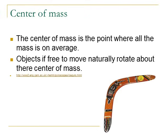Another term you need to be familiar with before you start is center of mass. Center of mass is like the average — where all the mass is on average. If you can find one spot, for example for a boomerang, the center of mass is right about here, halfway in between. Even though it's not on the boomerang, it's still the center of mass. If you allow an object to rotate freely on its own, it will always rotate about its center of mass, so the boomerang rotates about that point right there.